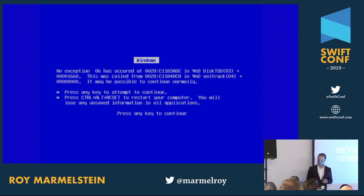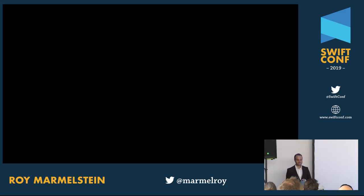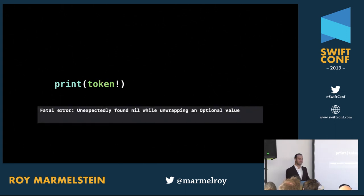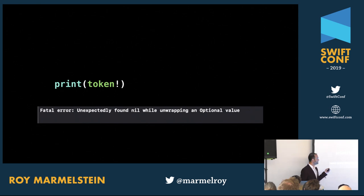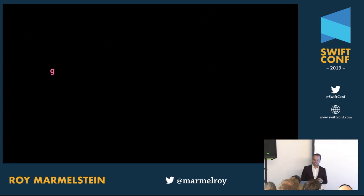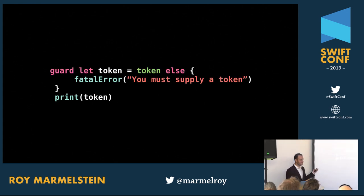How we force unwrap is very easy — you just use an exclamation point. What will happen if there is nil there, you'll get a fatal error saying "unexpectedly found nil while unwrapping an optional value." A lot of people have issues with this because that error message is not very useful.